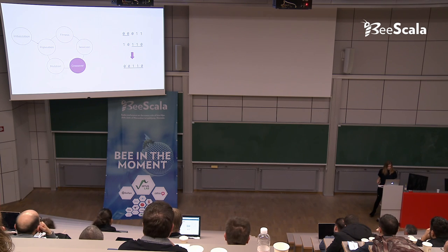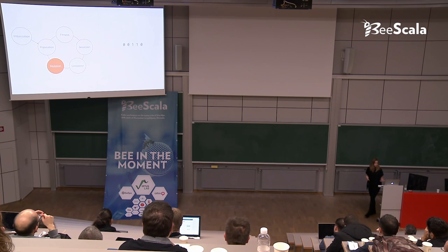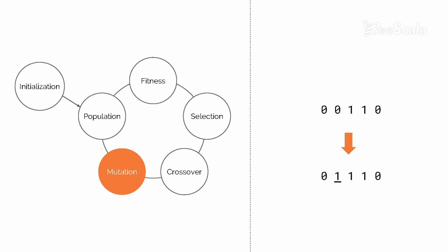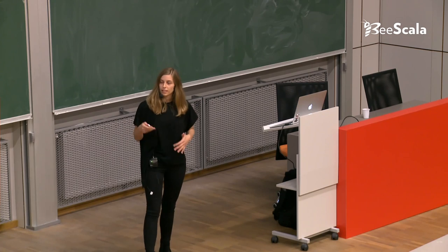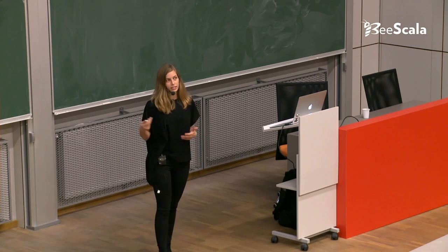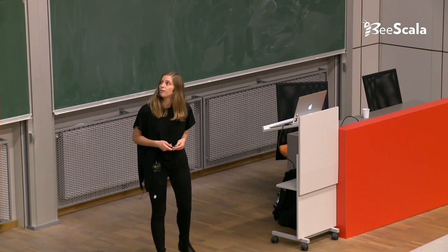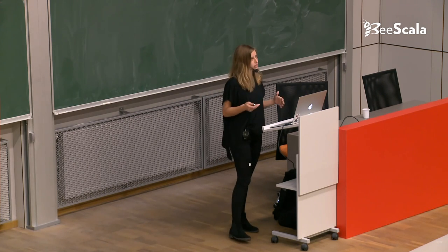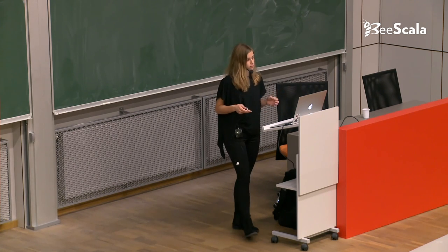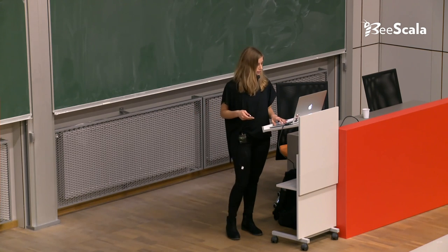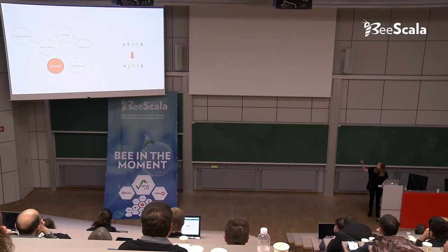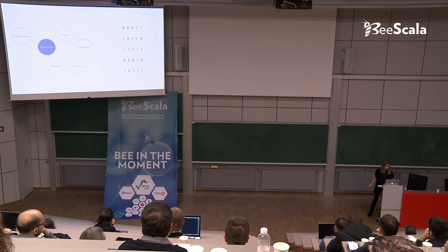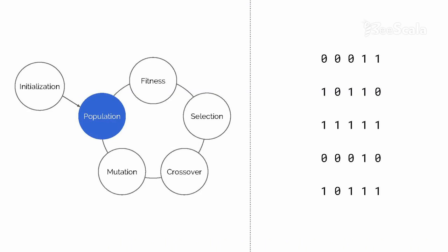One last thing before we add these children to the next generation is to apply some mutation, like what happens in nature, with a very low probability. We'll understand later why this is important. For now, what we can do is go bit by bit and flip each bit with a very low probability. So here, for example, we got this mutated chromosome. Then we have a new population from all of these children created the same way.